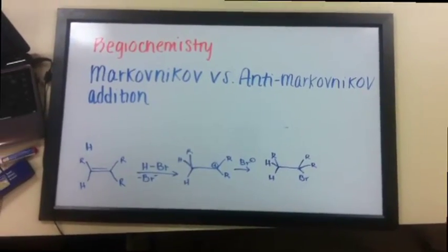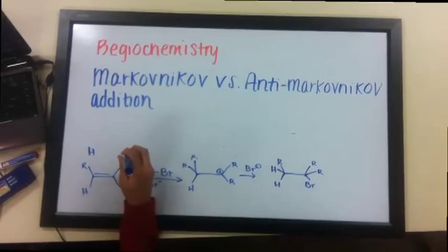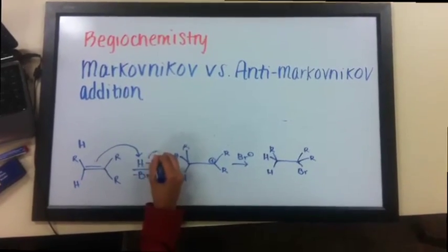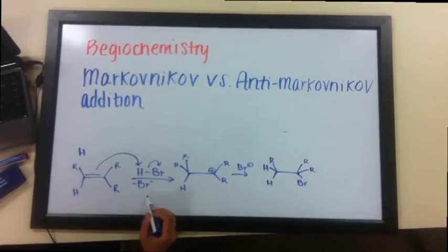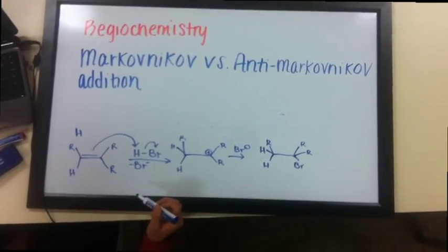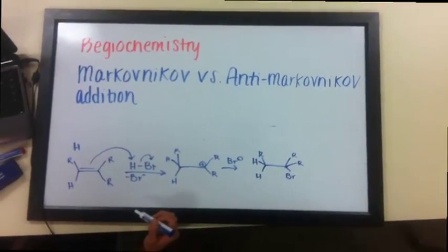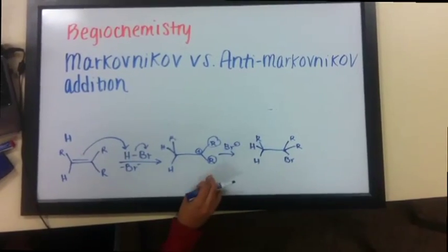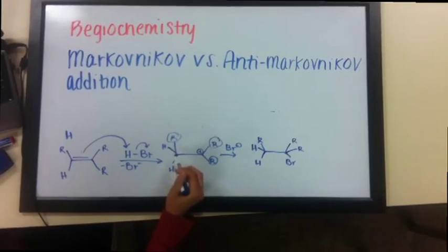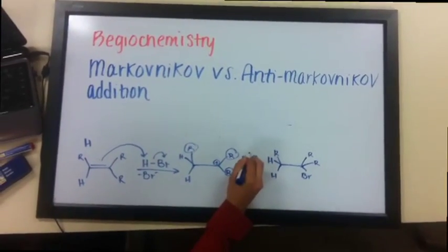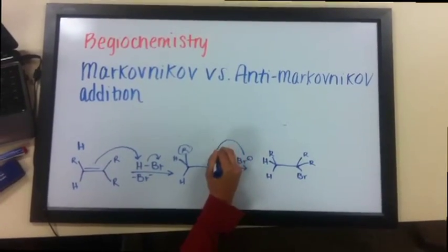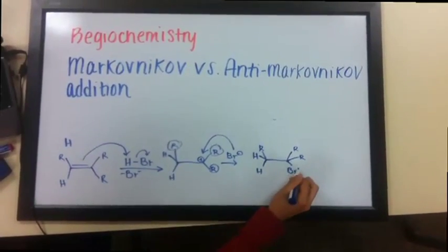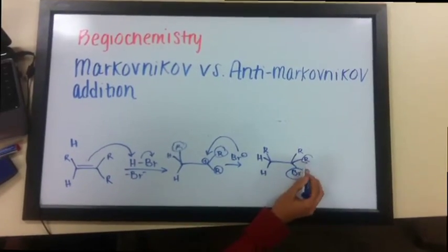The proton adds first to the carbon-carbon double bond, and the bond breaks and forms a bromide ion. Then, the carbon bearing more substituents forms a stable carbonium ion, or carbocation. So here we have two R's, which means we have more substituents than the other carbon, because it has one R and two hydrogens. And the negative halide attacks the positive carbocation and adds to the more substituted side with two R's.